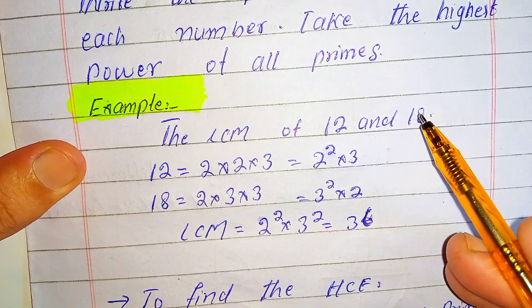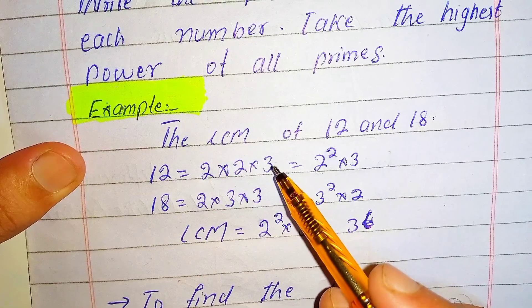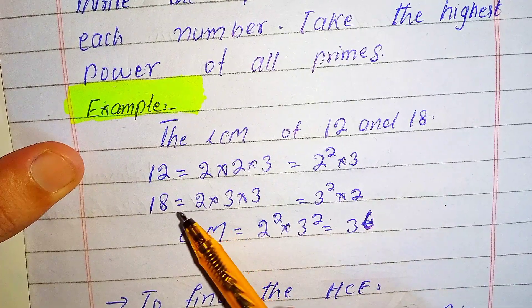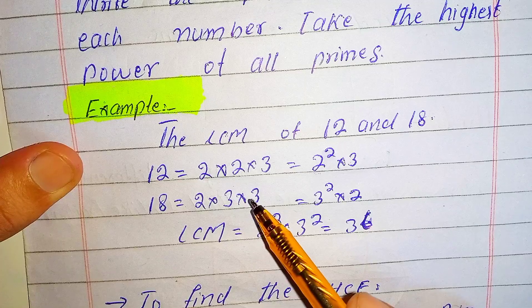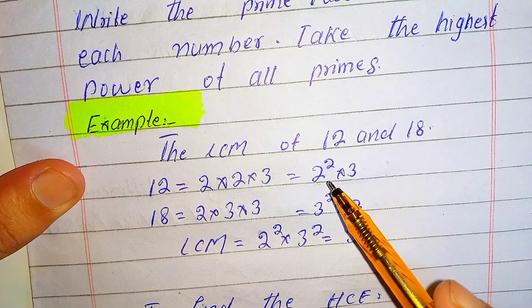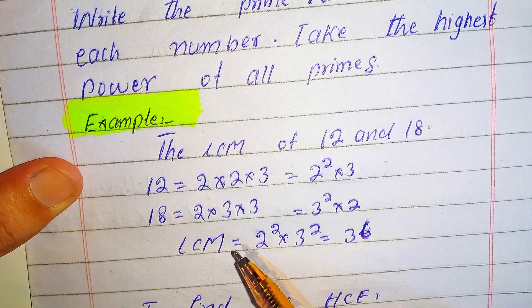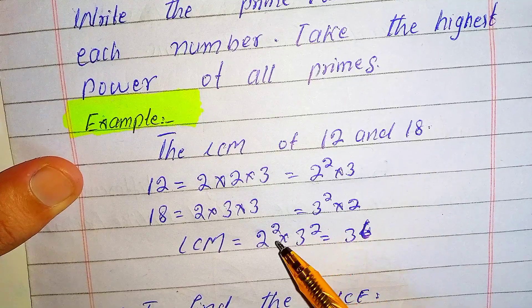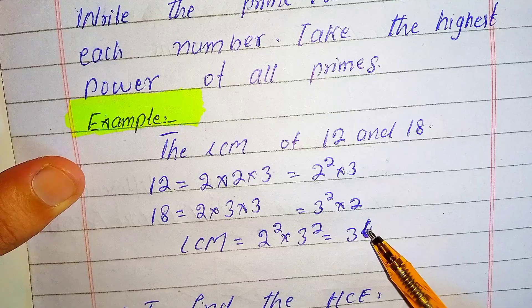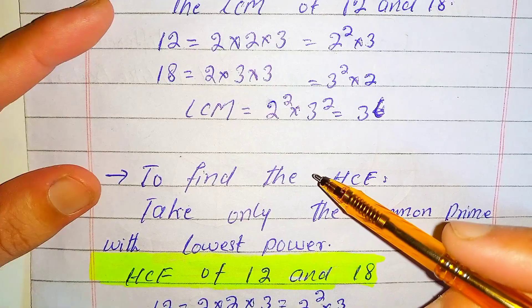For example, finding the LCM of 12 and 18: the prime factorization of 12 is 2 × 2 × 3, which equals 2² × 3. The prime factorization of 18 is 2 × 3 × 3, which equals 2 × 3². We select the highest powers: 2² and 3². So the LCM of 12 and 18 equals 2² × 3² = 36.